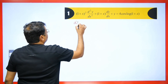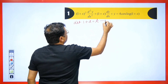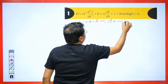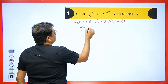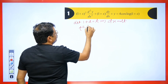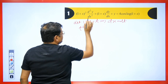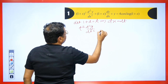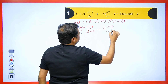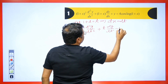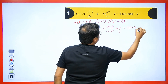We write: let 1 + x = t, which implies dx = dt. When you substitute this value, we get t² d²y/dt². The value of dx is dt, so dx² becomes dt². Therefore, this becomes t dy/dt in place of dx, plus y, and this will become equal to 4 cos(log t).